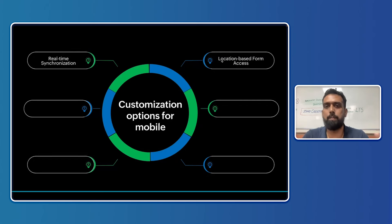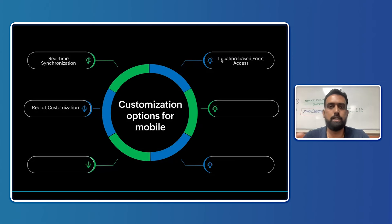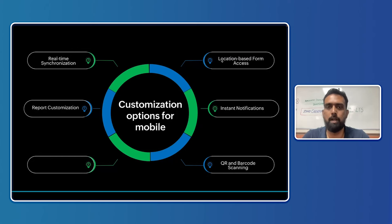With forms, you have a host of customization options. You can have location-based form access, where depending on a user's location, access to forms can be granted — very useful for vendors who visit specific places where forms can only be filled and submitted. Report customization lets users view personalized, user-friendly reports on mobile, which is a very different experience from viewing reports on web. You also have instant notifications to keep up with important tasks.